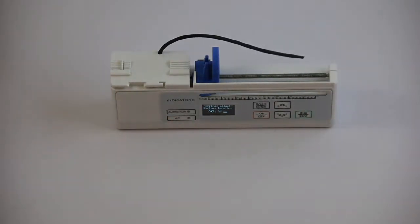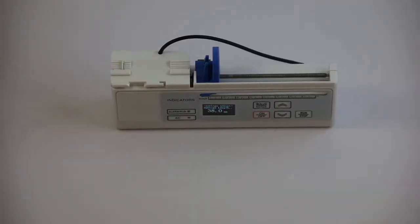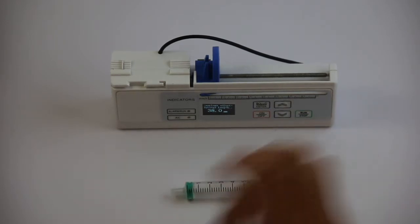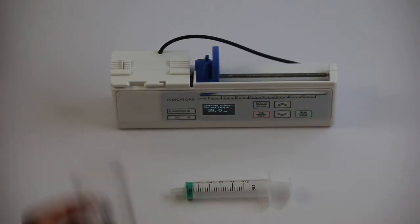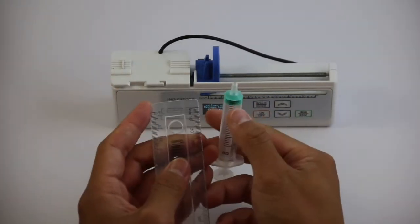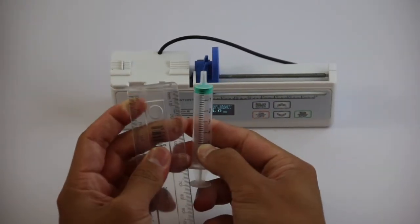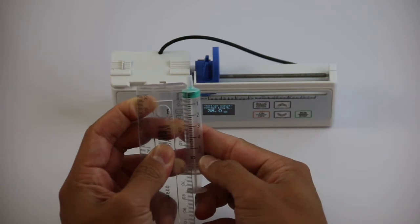To determine the effective length of your syringe, use a ruler to measure the length of the syringe that corresponds to the syringe's volume. In this video I've chosen a 5 milliliter syringe and measured the effective length to be 42.5 millimeters.